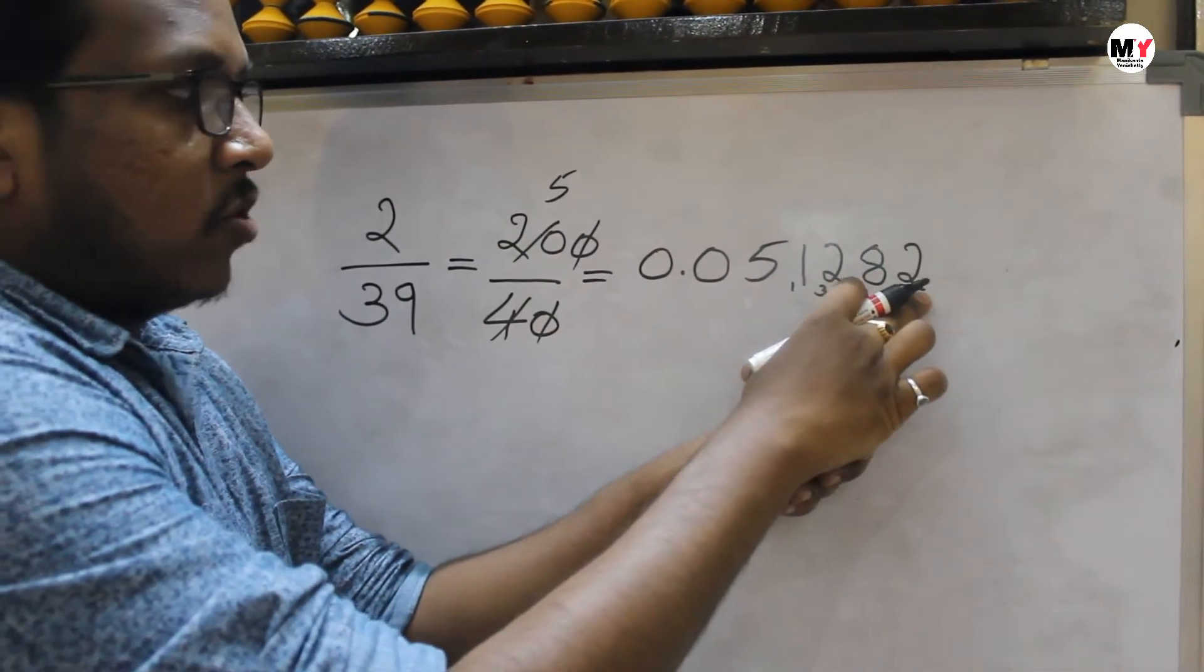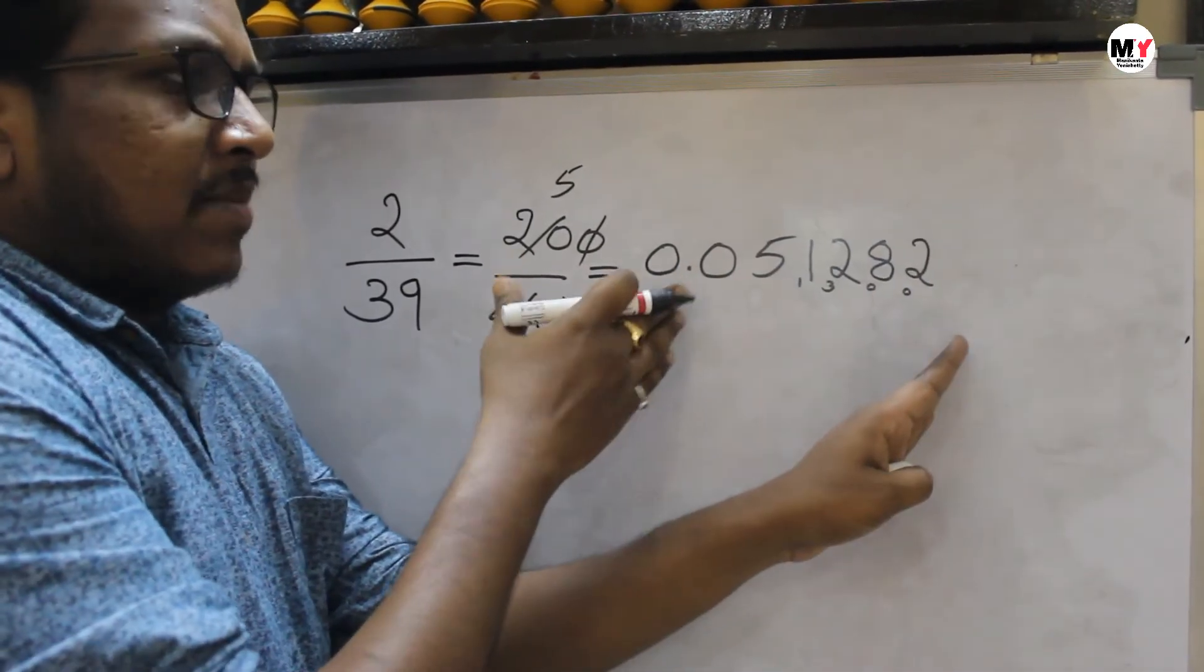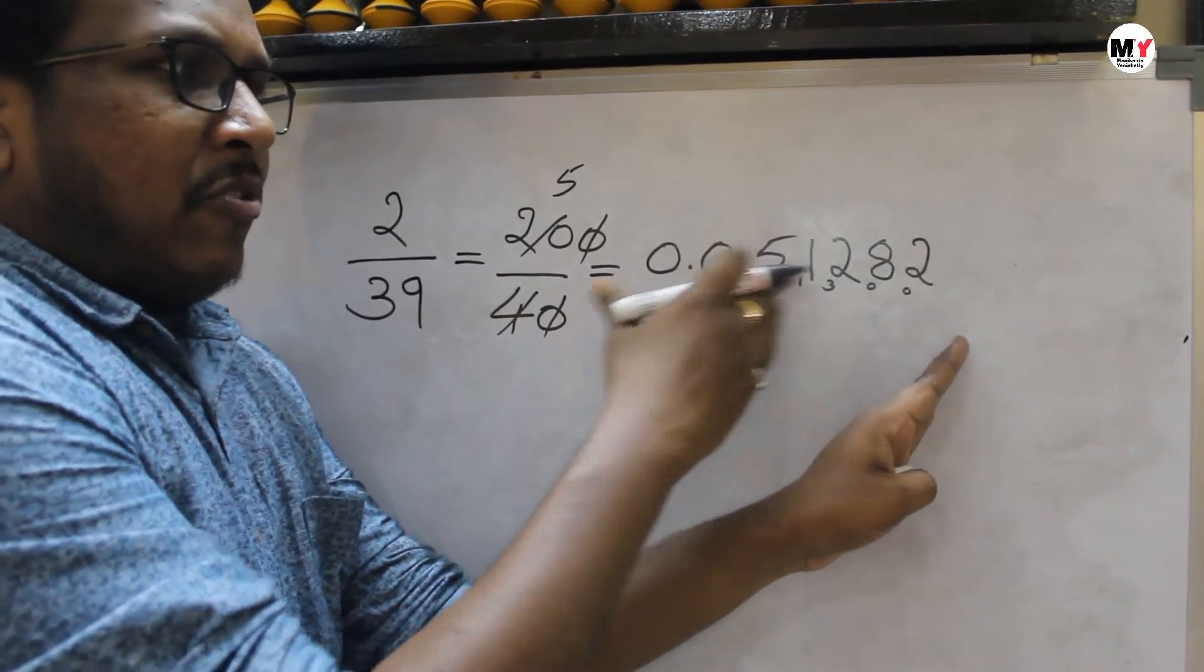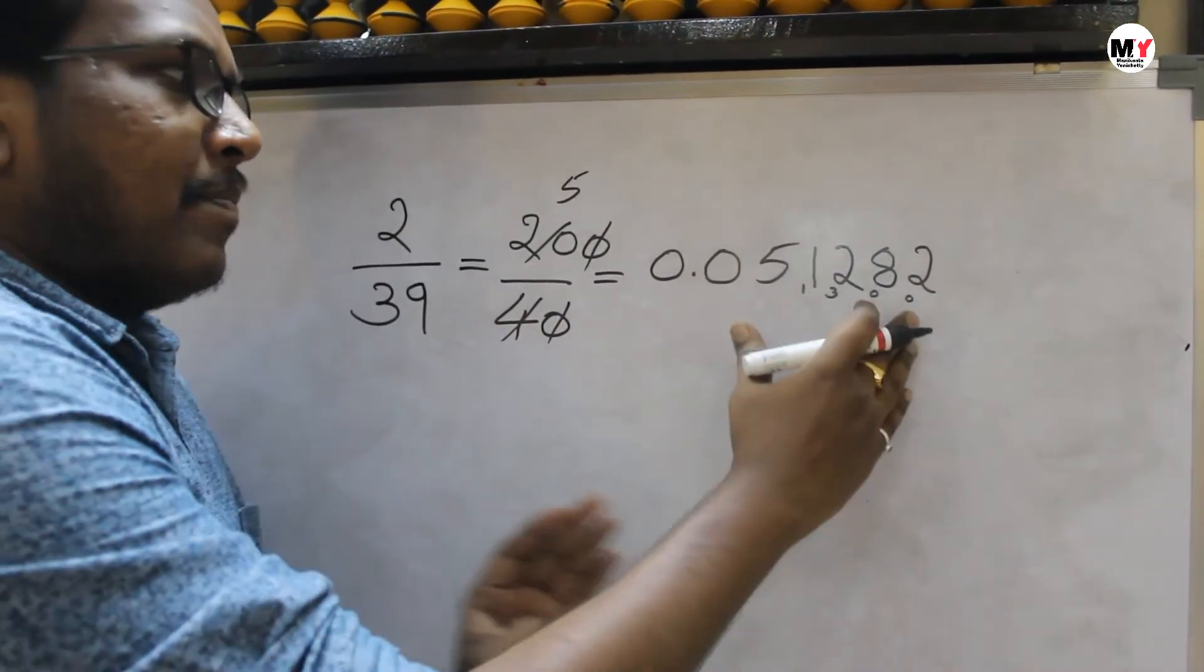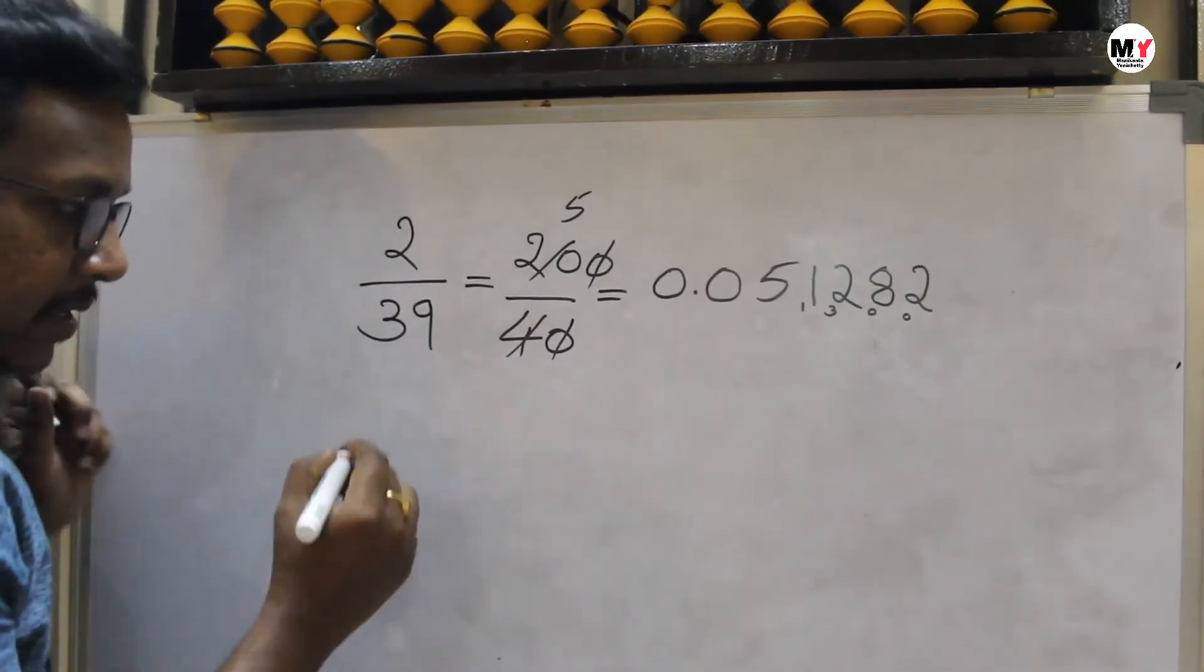When again, it's not possible as a decimal is there, so just keep a 0 again and then continue. So in most of the exams, we require after decimal, like 3 or 4 digits only. So this is the simple way to divide the fraction. Let's see one more example, then you will understand clearly.